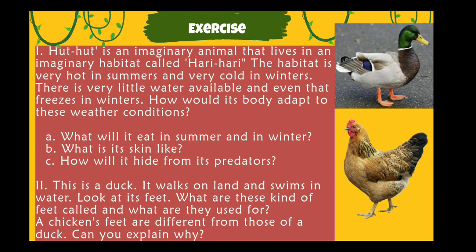The first question says: Hathat is an imaginary animal that lives in an imaginary habitat called Hari Hari. The habitat is very hot in summers and very cold in winters. There is very little water available and even that freezes in winters. How would its body adapt to these weather conditions? What will it eat in summer and in winter? What is its skin like? How will it hide from its predators? Do this in your notebook.